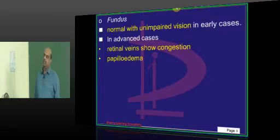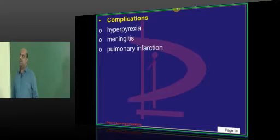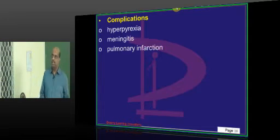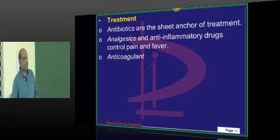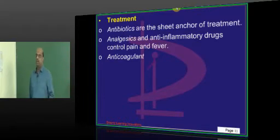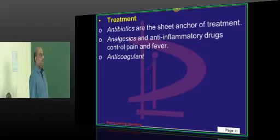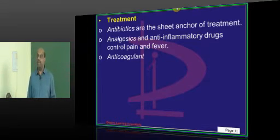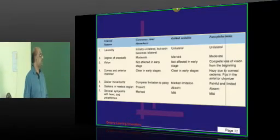On fundus examination, it is generally normal, though retinal veins may show a little congestion and a bit of papilledema. The patient overall being very sick and septic can have hyperpyrexia and meningitis. The thrombus in the cavernous sinus can embolize just like any other venous thrombus and can lead to pulmonary infarction as a complication. Treatment: antibiotics are the main sheet anchor. Analgesics are also given. Anticoagulants have a controversial role — while the thrombotic state may suggest their use, the risk of bleeding must always be accepted, so their role remains controversial.